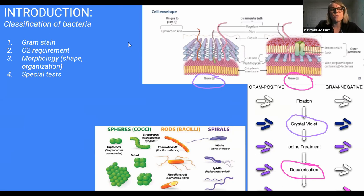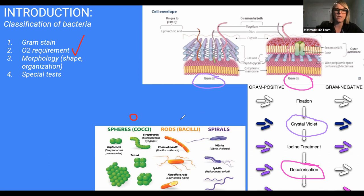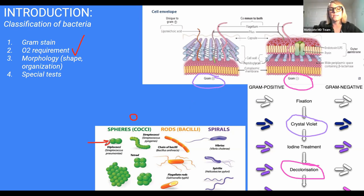We also look at oxygen requirements — whether it's anaerobic, meaning it doesn't like oxygen, or aerobic, it does like oxygen. We also look at morphology. We can classify bacteria into three broad categories. Cocci are little ball-shaped bacteria. We can see them not just by shape but by arrangement — if they're in twos, we call that a diplococcus, as with Strep pneumoniae. If they're in chains, like streptococcus, we often see that with Strep pyogenes, which is Group A Strep — the classic cause of strep throat.